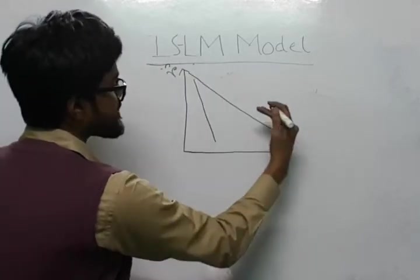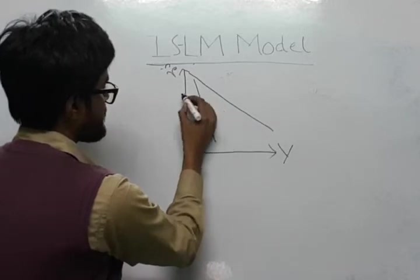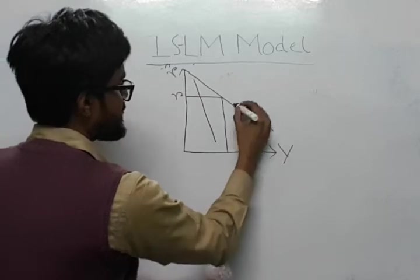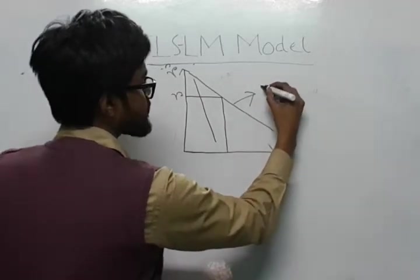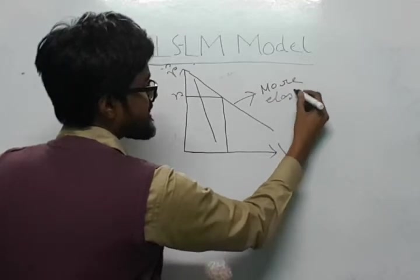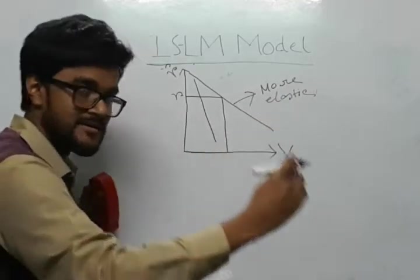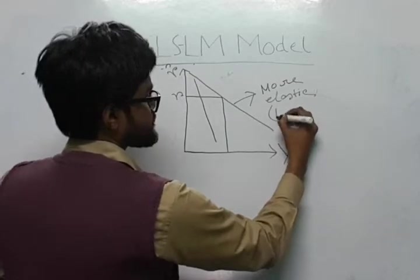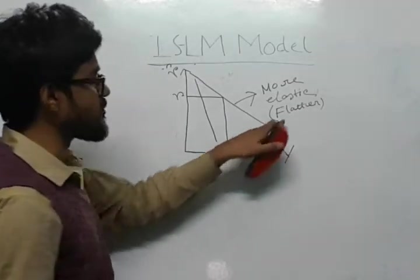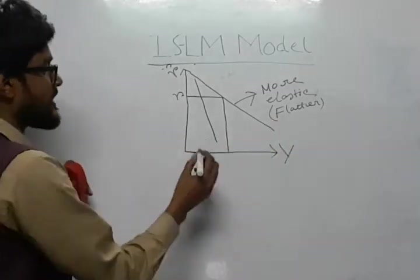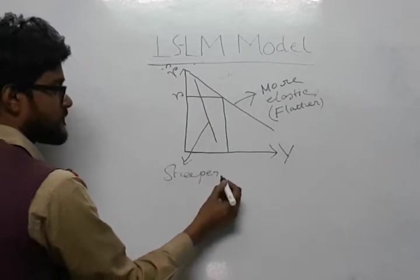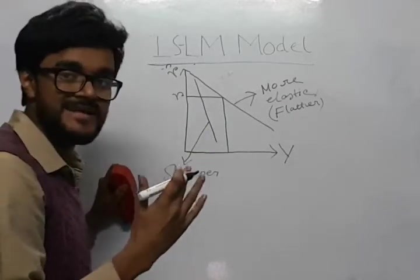Now, this flatter IS curve means the elasticity is more, that is, it is more elastic. So, when the IS curve is flatter, we call it more elastic. And when the IS curve is steeper, we say the IS curve is less elastic.